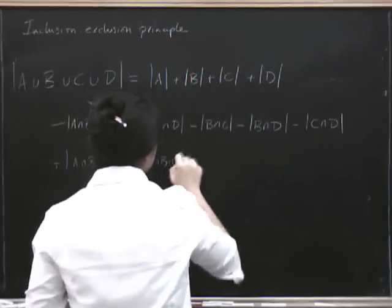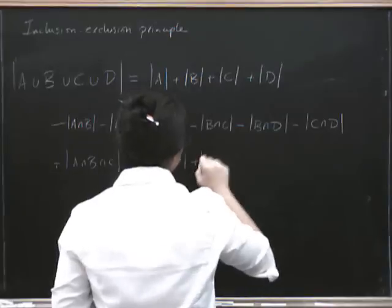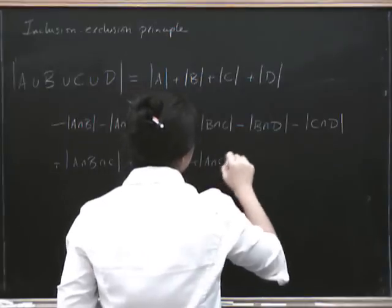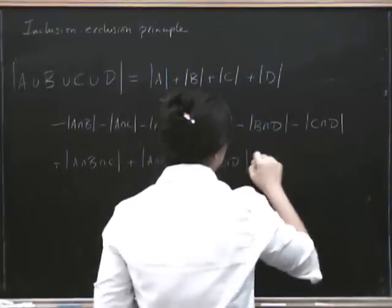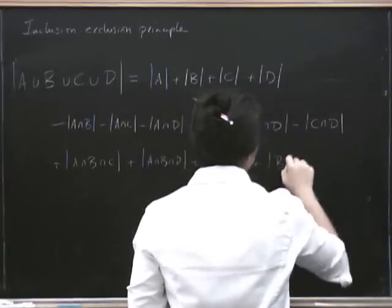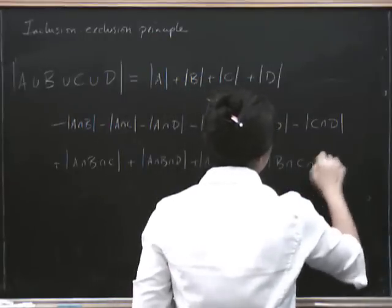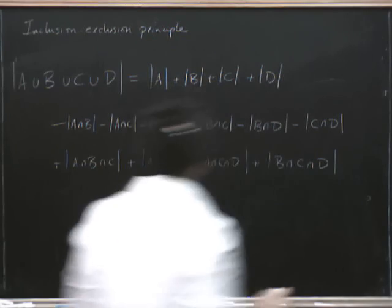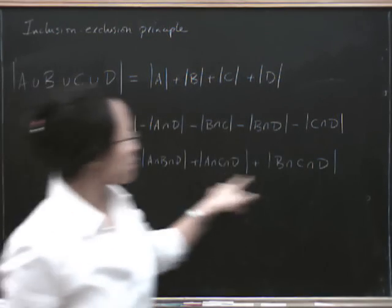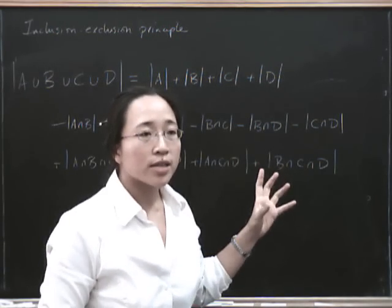And everything in A, C, D, and then the last one that's remaining should be B, C, D. There have got to be four ways of doing that, because in each case I'm just leaving out one set.